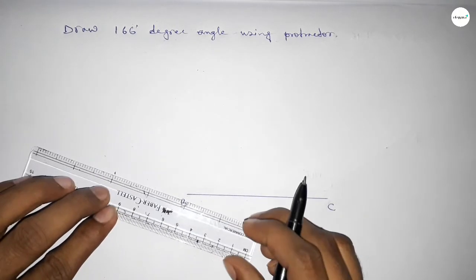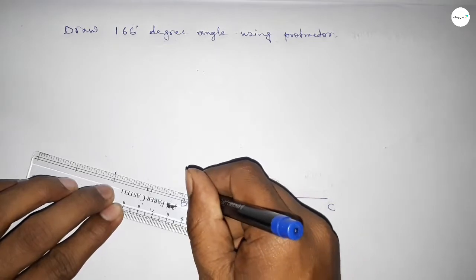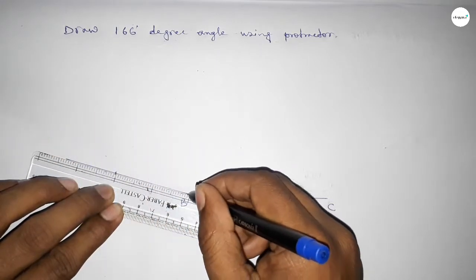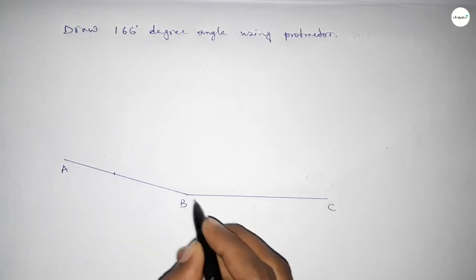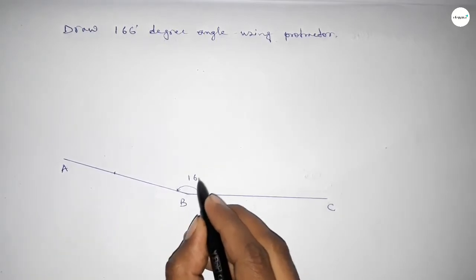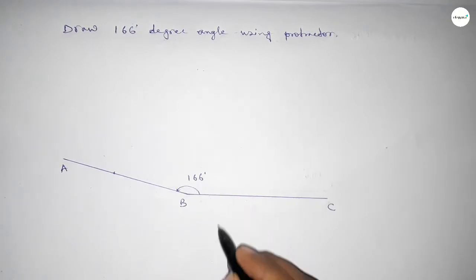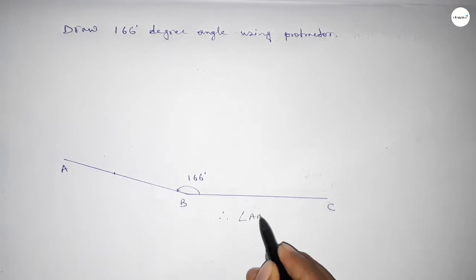Now joining this to get 166 degree angle. So now taking here point A, so angle ABC is 166 degree angle. Therefore angle ABC equal to 166 degree. That's all.